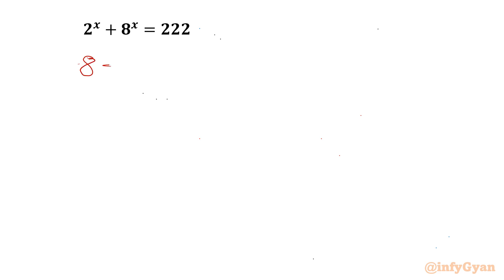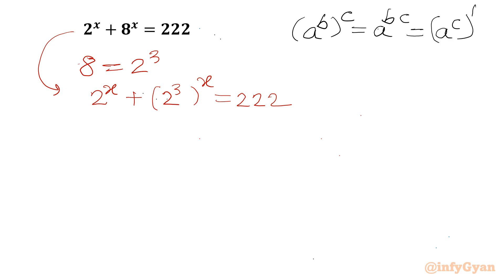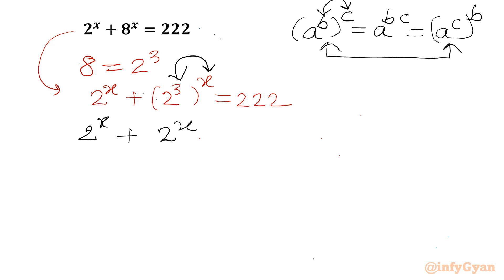We can write 8 as 2 cubed. So our equation becomes 2^x + (2³)^x = 222. Now from the properties of exponents, we know that (a^b)^c = a^(b·c) = (a^c)^b — we can swap the powers b and c. So swapping 3 and x, we get 2^x + (2^x)³ = 222.